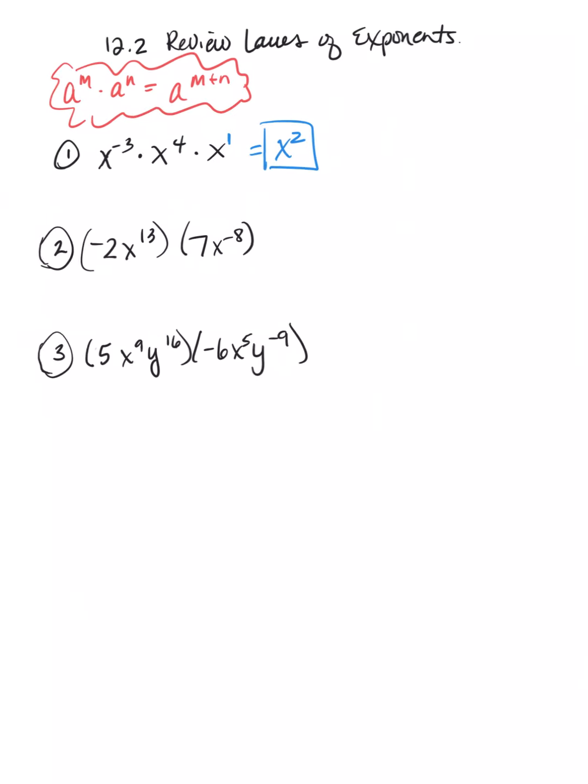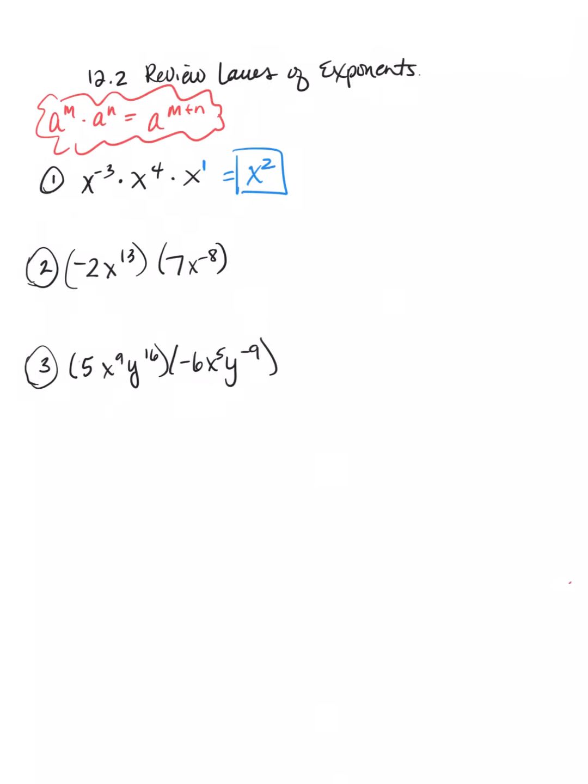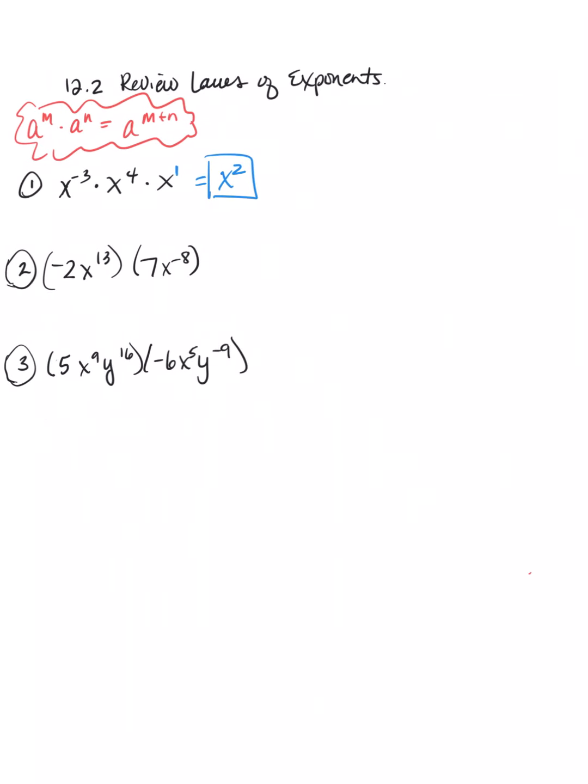Now, number 2 is different, because it's got some bigger coefficients, right? Well, coefficients are going to act the same. They're not going to do anything weird. So, we're going to multiply coefficients just like we always would. So, it would be negative 14. And then x is the same base, right? So, 13 minus 8 would give me 5x to the 5th. So, make yourself a little note here. Coefficients multiply the same. Coefficients are regular numbers. So, no special rules apply.